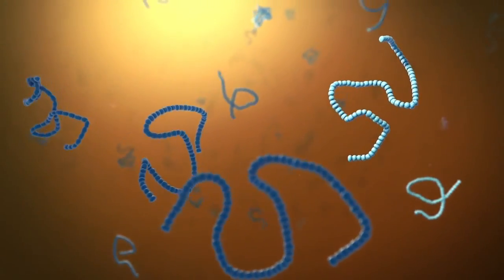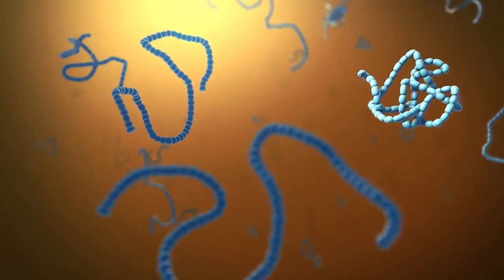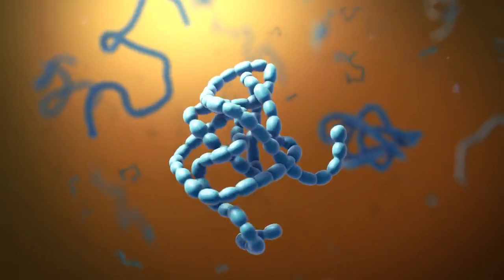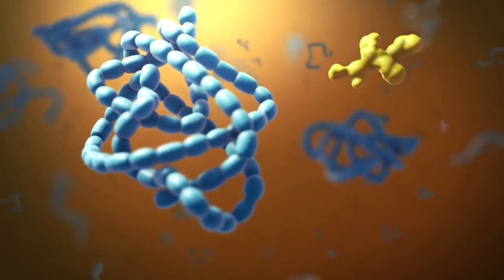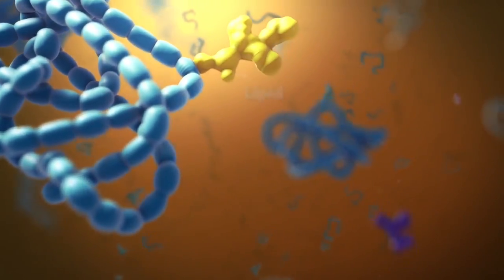As proteins move through the Golgi body, they're customized into forms that the cell can use. The Golgi body does this by folding the proteins into usable shapes or adding other materials onto them, such as lipid molecules or carbohydrates.